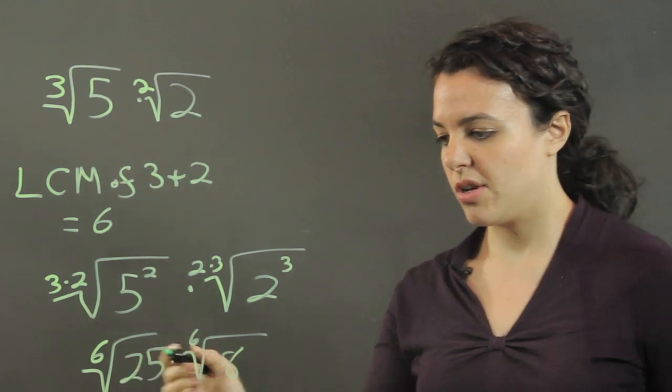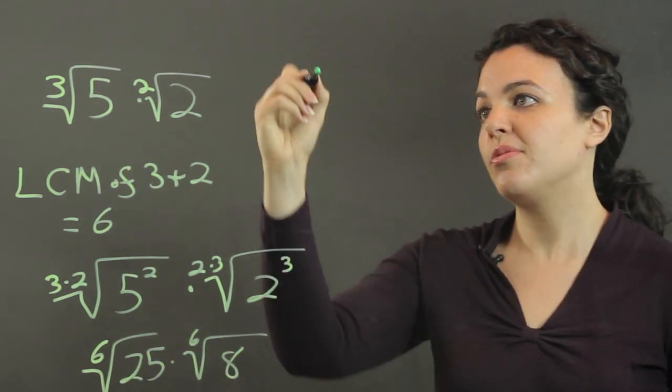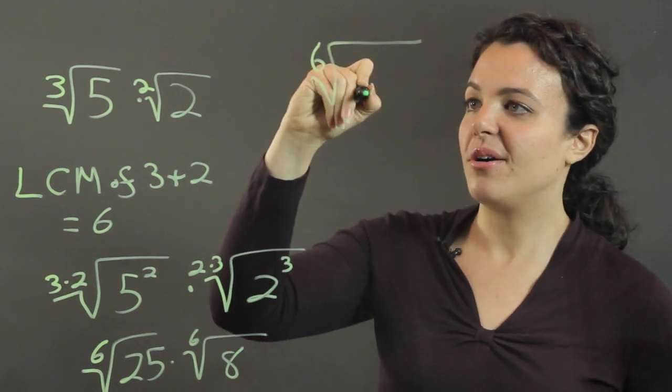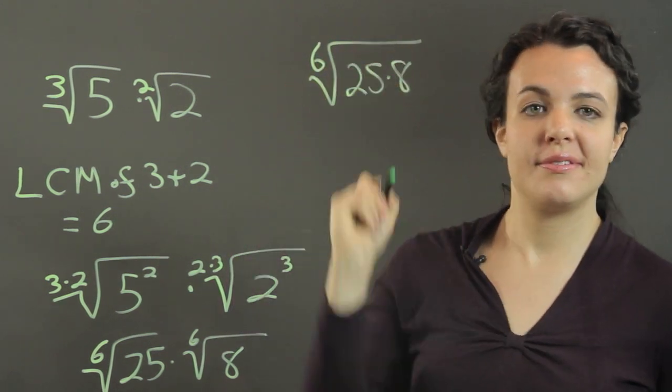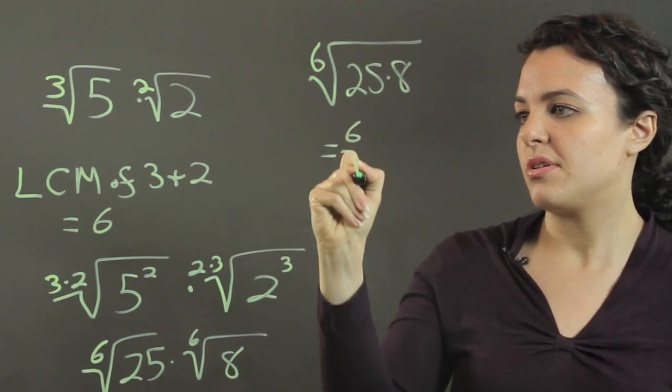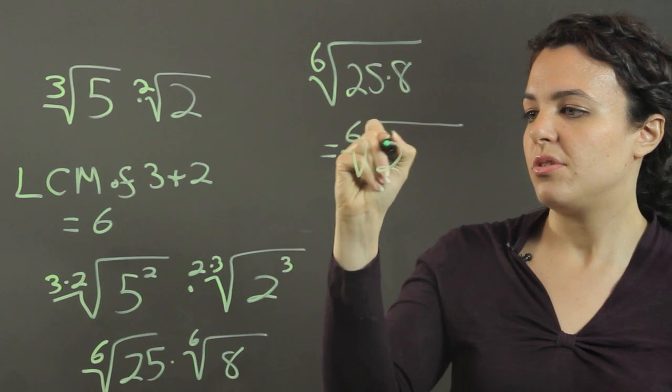And those can all come under the same root symbol. We've got the 6th root of 25 times 8, which is equal to the 6th root of 200.